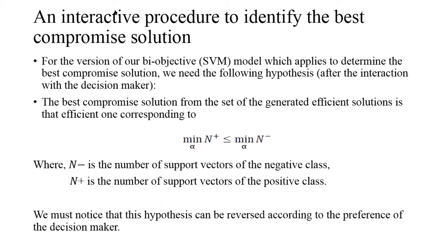An interactive procedure to identify the best compromise solution. For our bi-objective SVM model, to determine the best compromise solution we need the following hypothesis. After interaction with the decision maker, the best compromise solution from the set of generated efficient solutions is that efficient one corresponding to minimum n-plus less than or equal to minimum n-minus, where n-minus is the number of support vectors of the negative class and n-plus is the number of support vectors of the positive class. We must notice that this hypothesis can be reversed according to the preference of the decision maker.